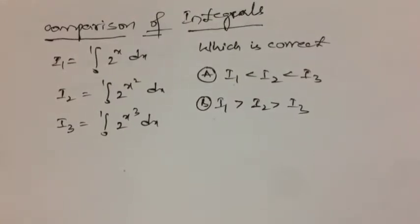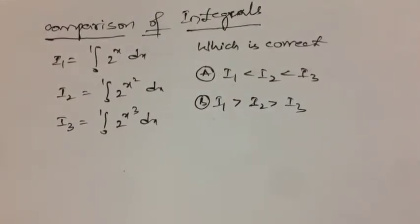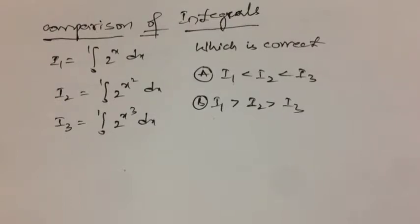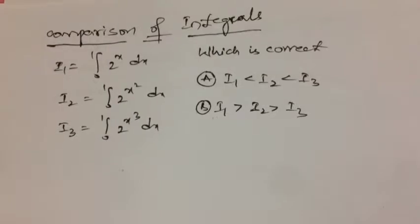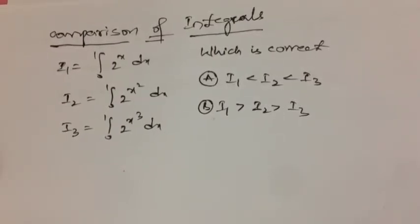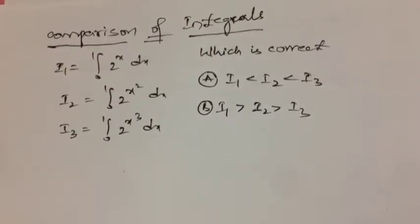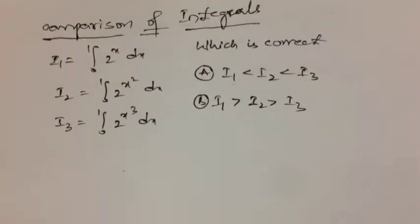I₂ is integral 0 to 1, 2^(x²) dx. I₃ is integral 0 to 1, 2^(x³) dx, which is correct. So I₁ less than I₂ less than I₃, that is option A. Option B is I₁ greater than I₂ greater than I₃. So this you have to express which is correct.